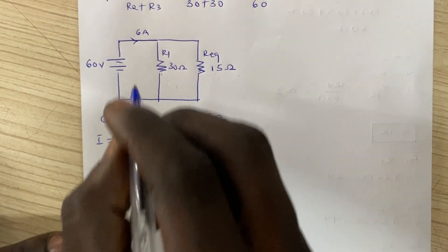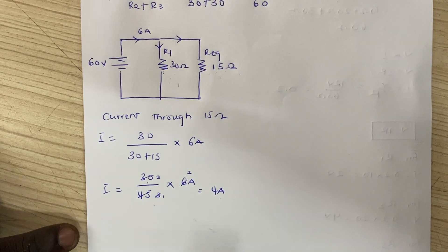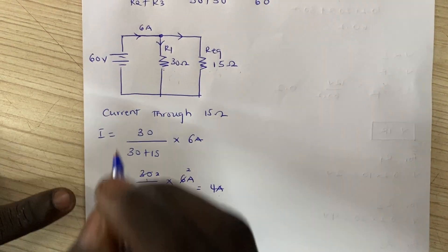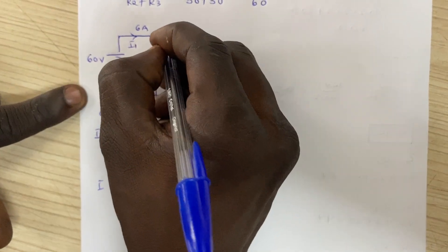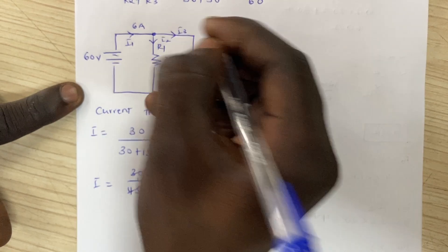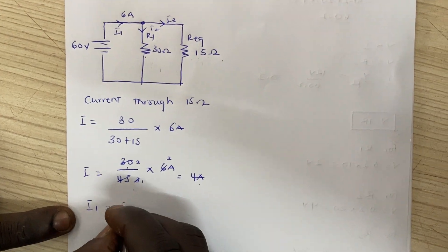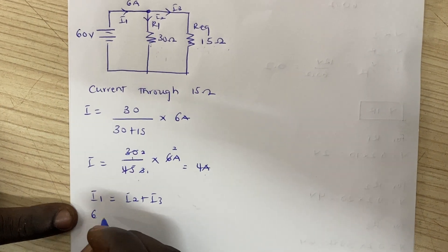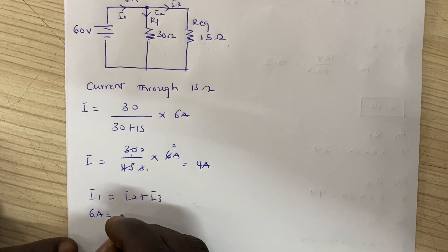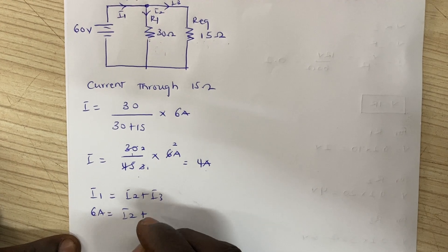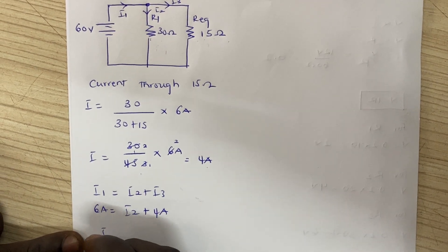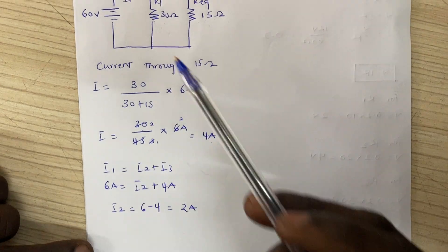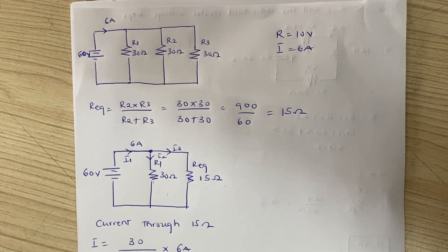We know from Kirchhoff's Current Law that the total current entering a node equals the total current leaving a node. Assigning values I1, I2, and I3: I1 equals I2 plus I3. I1 is 6 amps, I3 is the 4 amps we just found, so I2 equals 6 minus 4, which gives us 2 amps. So 2 amps is flowing through R1.